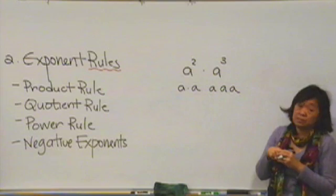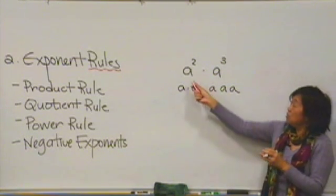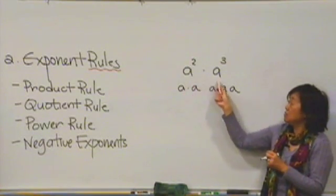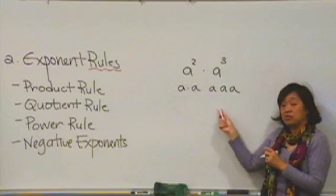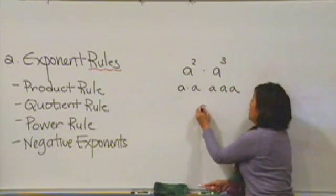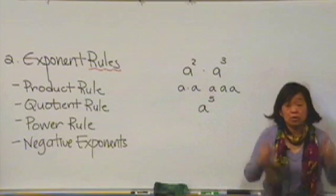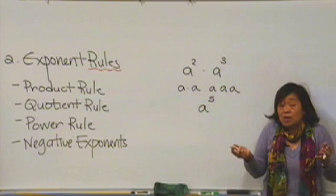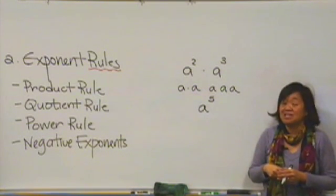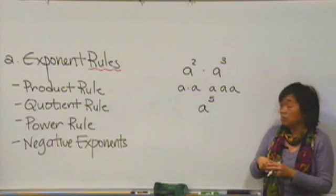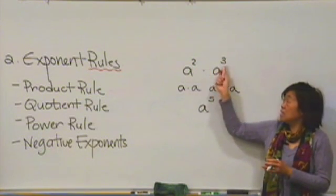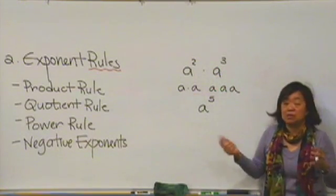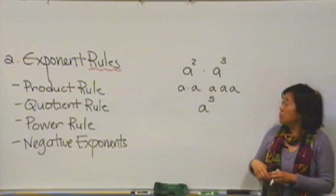So, if you remember that exponents are simply abbreviations, when you see a to the second times a to the third, and you think, okay, there's two a's here and three a's here, you can see that the abbreviation for your answer would simply be a to the fifth. If you want a rule, the rule would say you just add the exponents together.